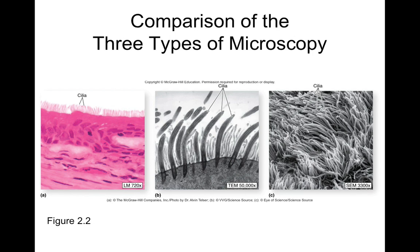If you had an electron microscope available, what would you want to look at up close? On eyelashes, there are little organisms that feed on oil secretions — you can brush your eyelashes onto a slide and see them wiggle around under a microscope. They're so small you're not aware of them. There's a whole universe even within us and on us. In fact, there are actually more bacteria inside your body than there are cells of your own body.